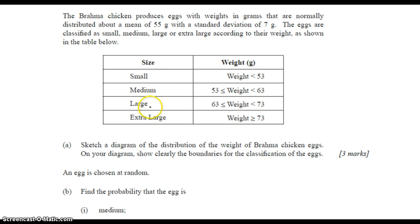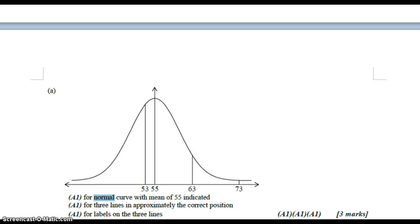Real quickly, you can see we have a normal distribution. We want to sketch a diagram of the distribution of the weight of the chicken eggs. You need to clearly show the boundaries for the classification of eggs. I'm going to sketch the diagram right here. Actually, I lied—I'm not going to sketch the diagram. I'm just going to show the answers. You can see that it's normally distributed. Here's the mean right through the top of the curve. Here are the borders. This was small, between here and here is medium, this is large, and this is extra large. Those don't necessarily need to be labeled, but you can see the lines between these sections, and you can see what the scores are for there.